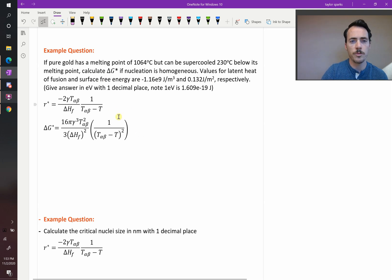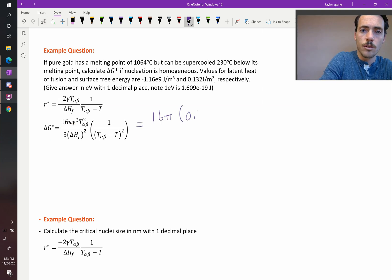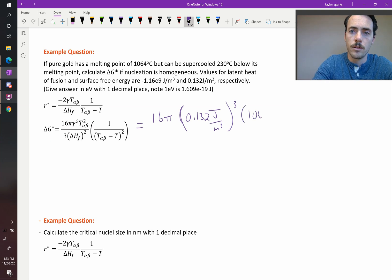All right, now we know the expressions are these. We just derived them. So all we have to do is plug things in here. Okay, let's start with delta G star. Delta G star is equal to 16 pi times surface energy cubed. So that's 0.132 joules per meter squared. We need to cube that term. We're going to multiply that by the temperature where you expect this to happen. Let's put that in Kelvin. 1064 degrees plus 273 puts it into Kelvin.